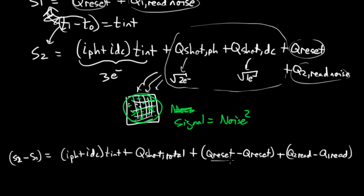I'm going to lump the shot noise sources together as Q shot total plus Q reset from the second operation minus Q reset from the first operation plus Q2 read minus Q1. And let's take a look at this expression. What do we see? Well, these quantities are the same. They're going to be the same from sample to sample. So this goes to zero.